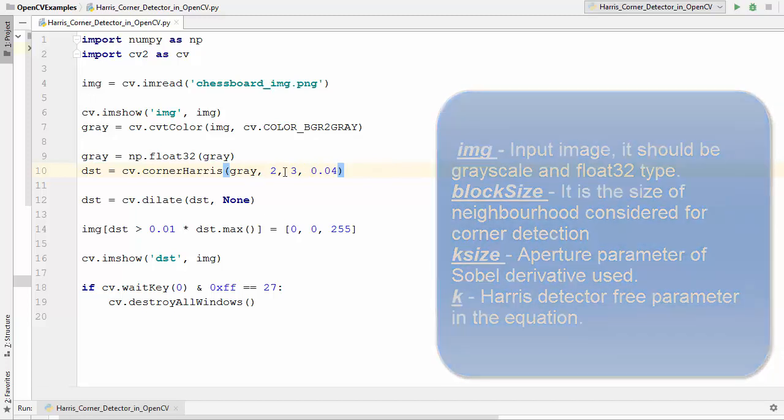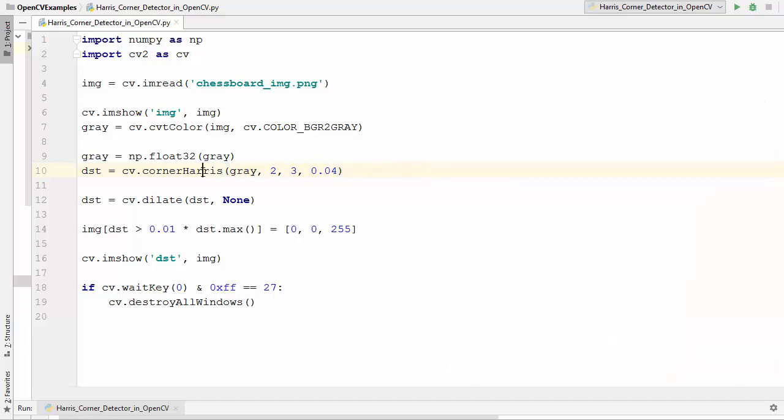After applying this Harris corner method to our image, we get this destination image. To get better results, we need to dilate this result. So we apply cv2.dilate method on our image which we get using the Harris corner, so this image has marked the dilated corners.